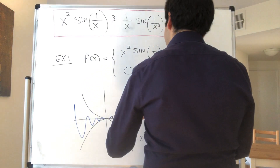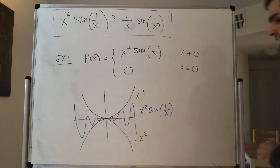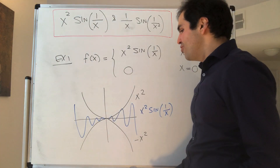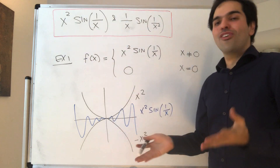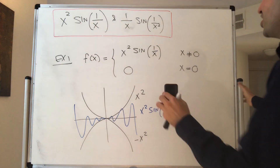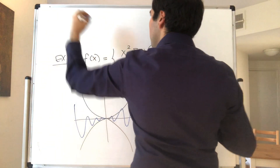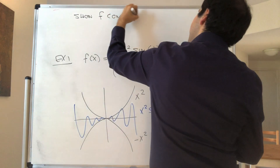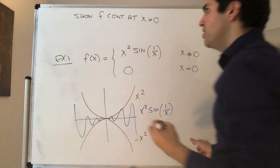So, x squared sine of 1 over x. In fact, you can use the squeeze theorem to find the limit, but weirdly, in this book we define continuity before defining limits, so let's just use the definition of continuity. Let's show f is continuous at 0.